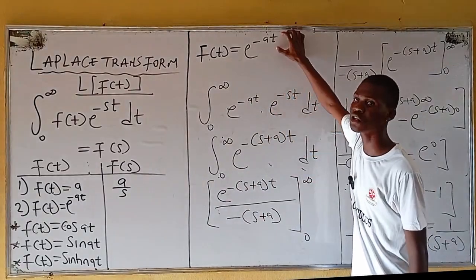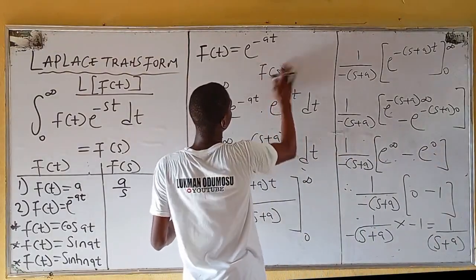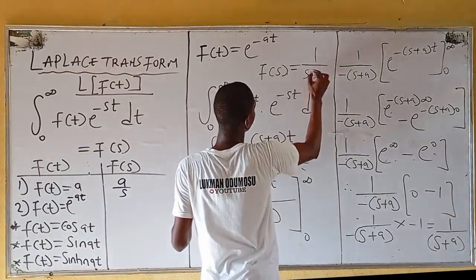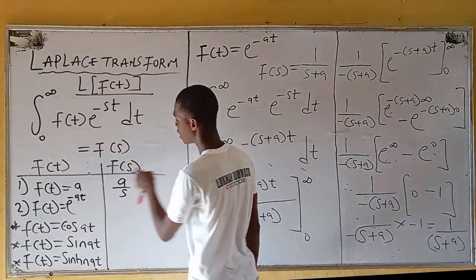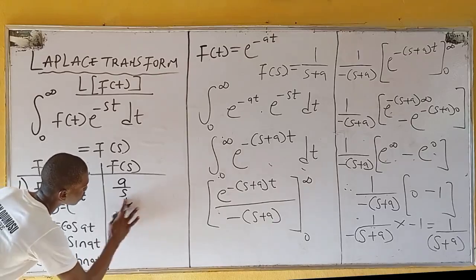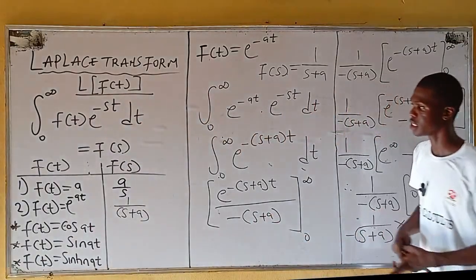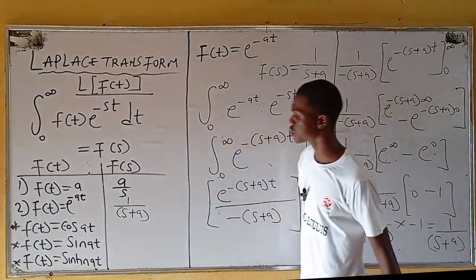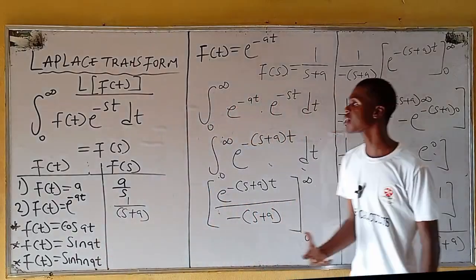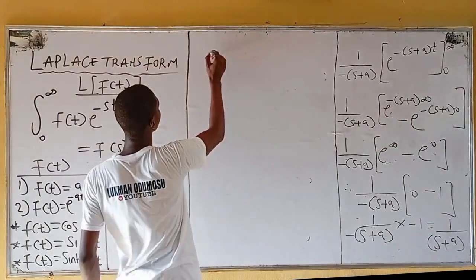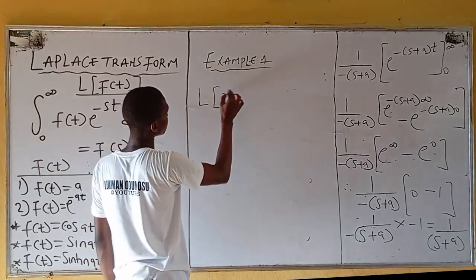Initially f(t) was e^(-at), and by transformation we end up with F(s) = 1/(s+a). So back to your table: given f(t) = e^(-at), F(s) = 1/(s+a). The next function we'll look at is cos(at), but before that let's take a few examples on this particular result.